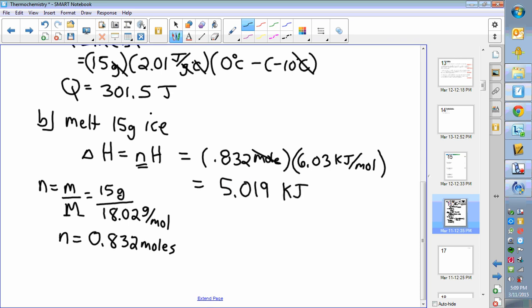Because moles cancels out, leaves kilojoules. Just a quick note while we're here: this is 301.5 joules, this is 5.019 kilojoules. So if we converted that, that's 5019 joules if you make it times a thousand, so that we're comparing the same things.